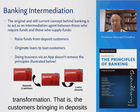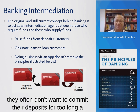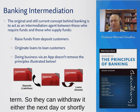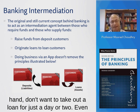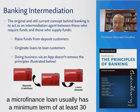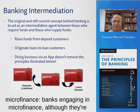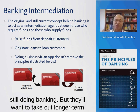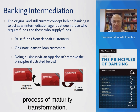The customers bringing in deposits on the left-hand side of that illustration often don't want to commit their deposits for too long a term, so they can withdraw either the next day or shortly afterwards without any penalty. The borrowers, on the other hand, don't want to take out a loan for just a day or two. Even a microfinance loan usually has a minimum term of at least 30 days — and microfinance is a whole separate industry, though banks do engage in it. Borrowers will want to take out longer-term loans, and there is this mismatch between the two. That is the process of maturity transformation.